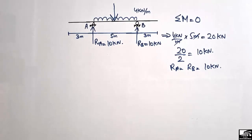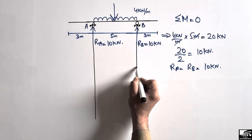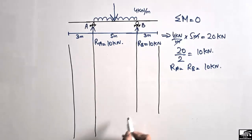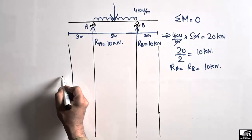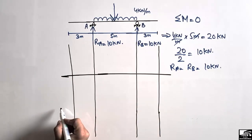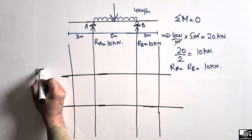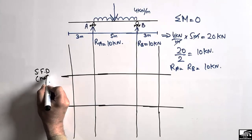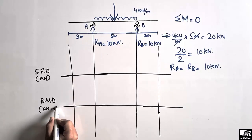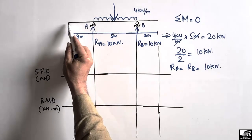To draw the shear force and bending moment diagram, I will draw the reference lines. The first reference line is for the shear force diagram in units of kilonewtons, and the second is for the bending moment diagram in units of kilonewton-meters.